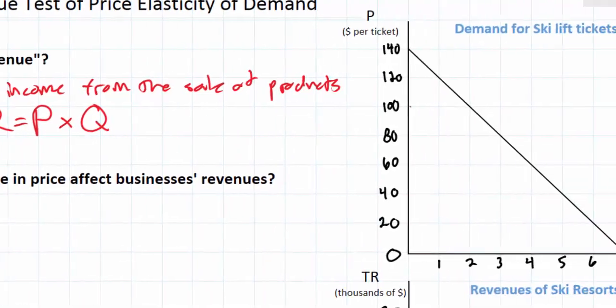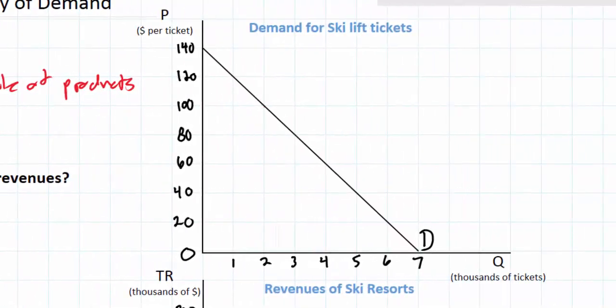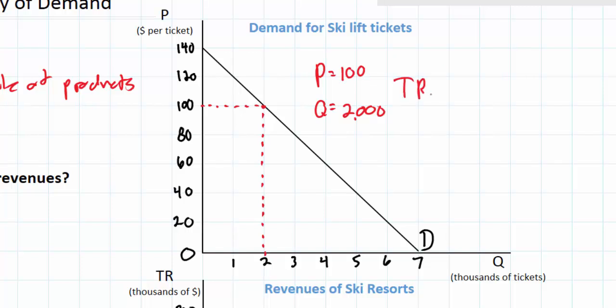Let's do one quick example. For example, if ski resorts were charging $100 per lift ticket, they could expect to sell, as we see here, 2,000 lift tickets. So at a price of 100 and a quantity of 2,000, we can easily calculate total revenue by multiplying price, 100, times quantity, 2,000. So we can do 100 times 2,000 and that would give ski resorts a total revenue of $200,000 in this case.